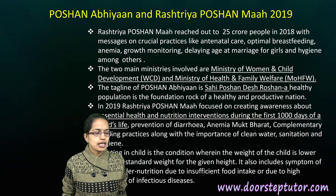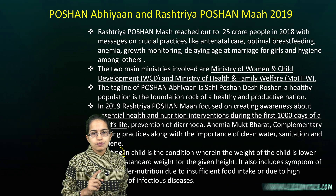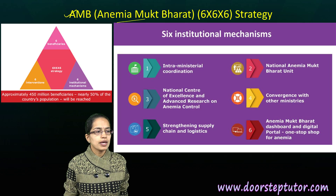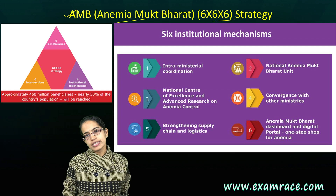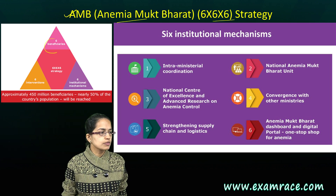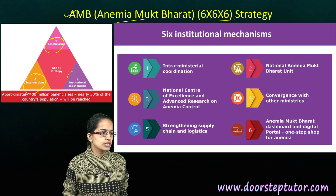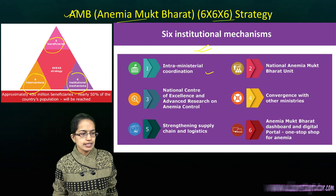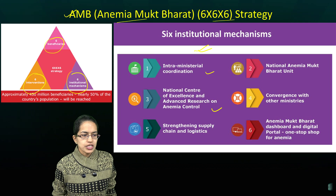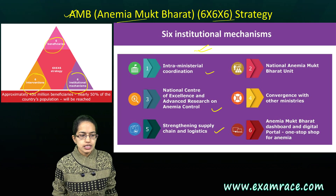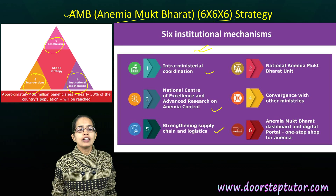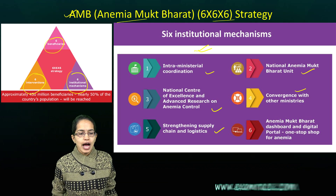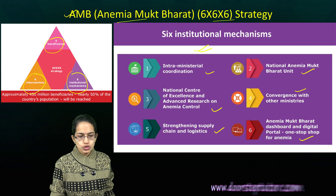Wasting and stunting are major concerns. Anemia Mukt Bharat uses a 6x6x6 strategy — 6 beneficiaries, 6 interventions, and 6 institutional mechanisms. The 6 institutional mechanisms are: National Centre for Excellence for Anemia Control, Strengthening the Logistics Supply Chain, Convergence with other units, the National Anemia Mukt Bharat Unit, a digital portal, and One Stop Shop for Anemia.